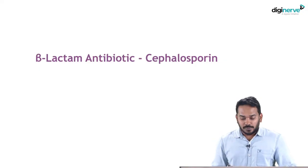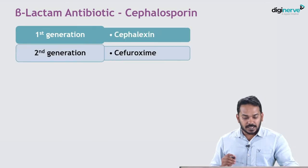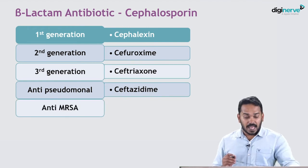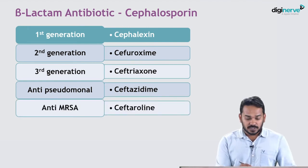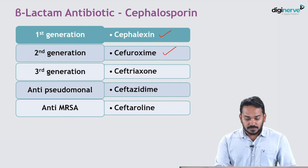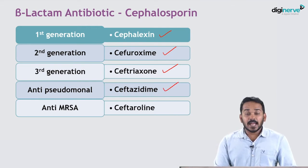Coming to today's topic, the first group we will be discussing would be cephalosporins. Cephalosporins are classified into five groups: first generation, second generation, third generation, anti-pseudomonal cephalosporins, and anti-MRSA cephalosporins. Examples are: cefazolin (first generation), cefuroxime (second generation), ceftriaxone (third generation), ceftazidime (anti-pseudomonal), and ceftaroline (anti-MRSA).